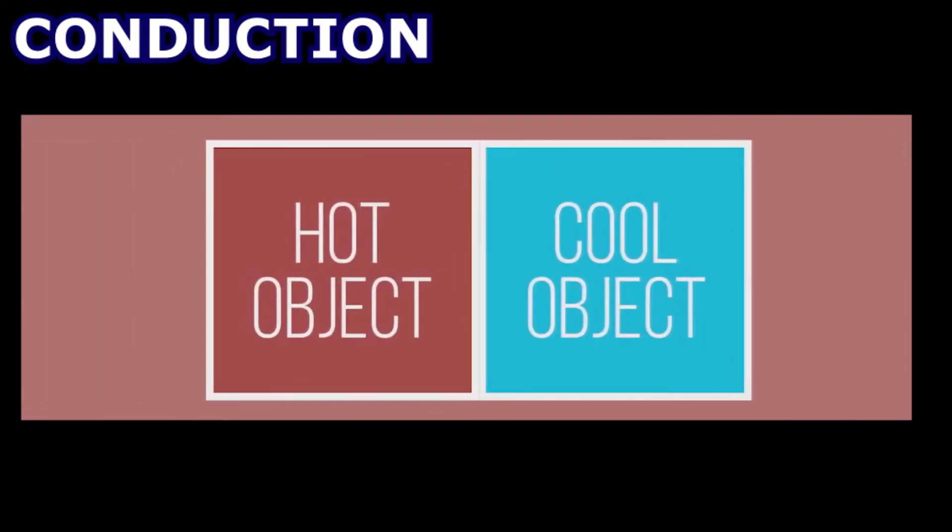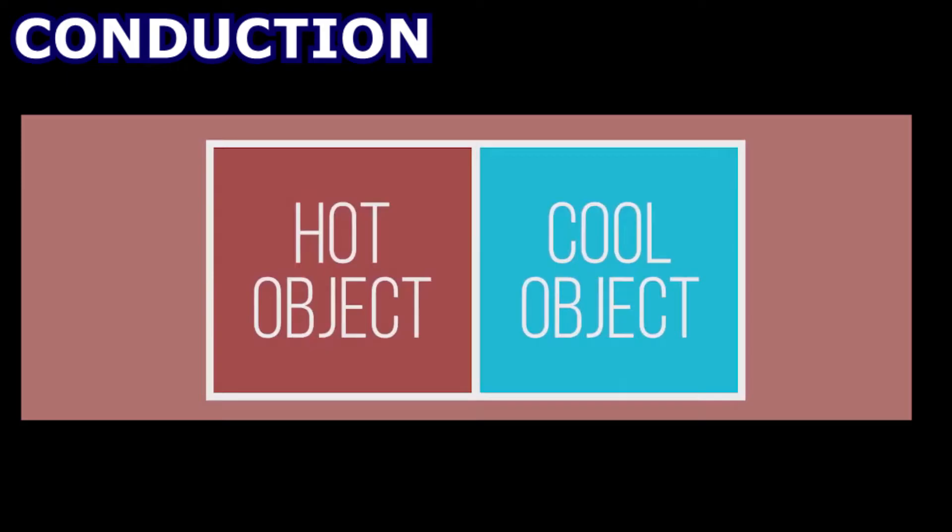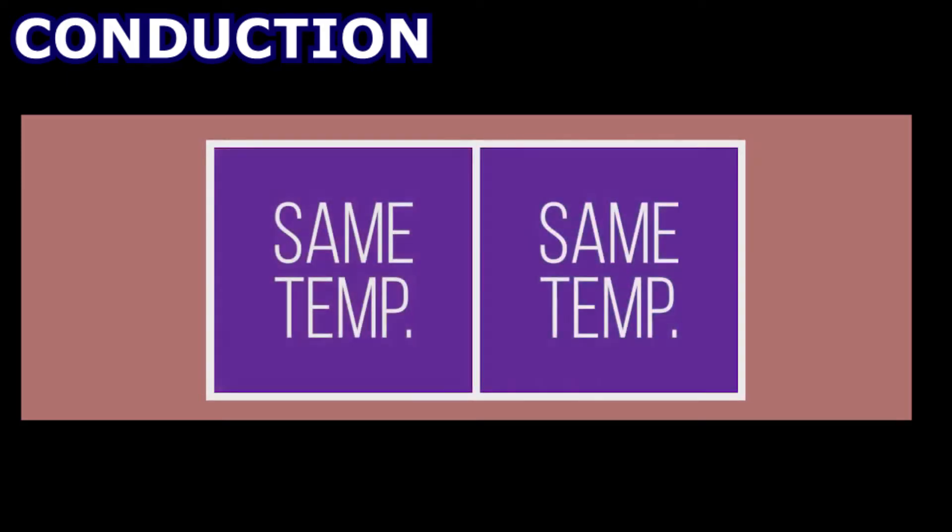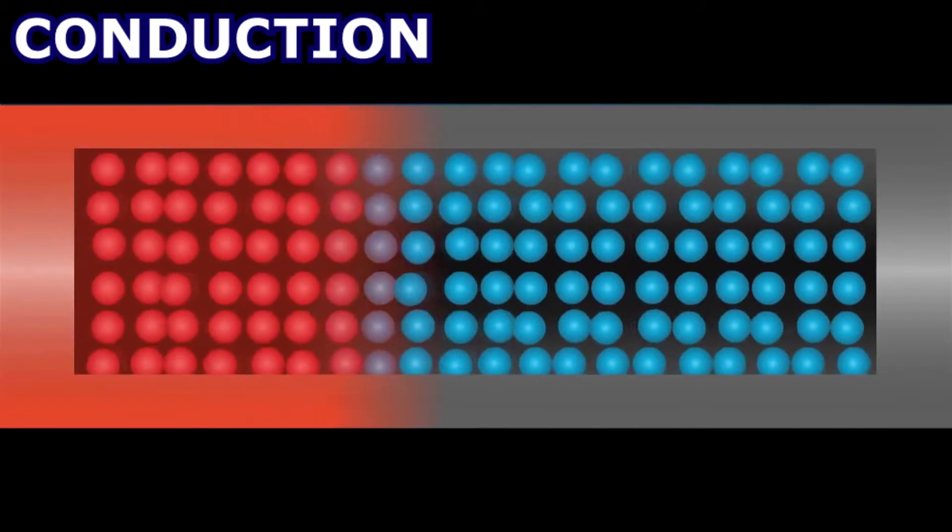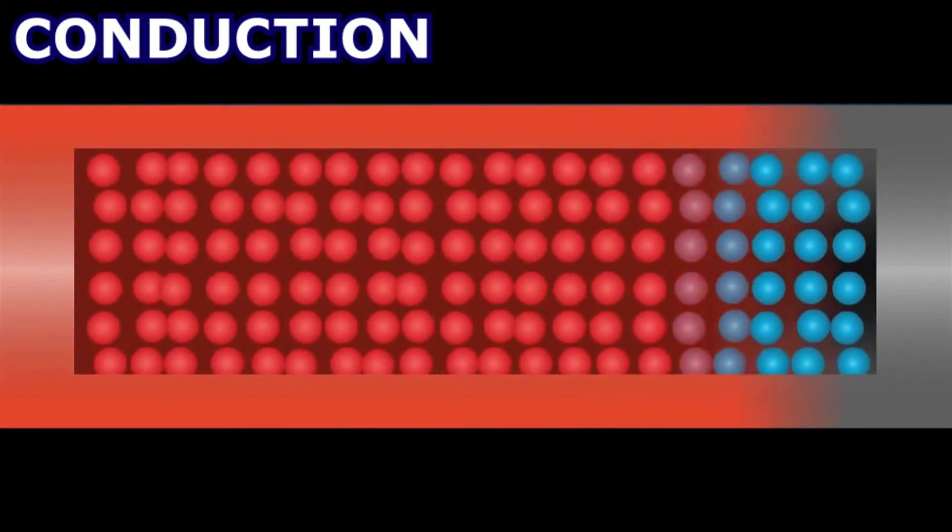At the same time, the temperature of the hot object will drop until both temperatures are equal. Heat can also travel through a single object because molecules collide with each other and transmit motion.